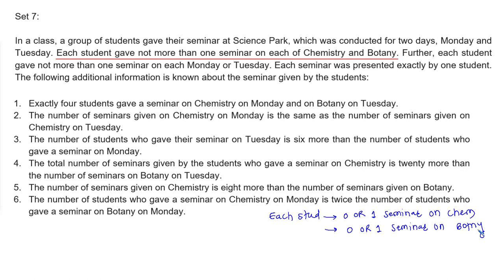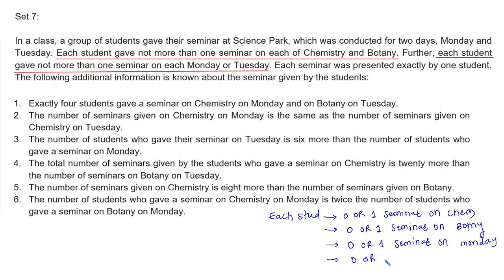Further, each student gave not more than 1 seminar on each of Monday and Tuesday. This means each student gave 0 or 1 seminar on Monday and 0 or 1 seminar on Tuesday. Each seminar was presented by exactly one student.